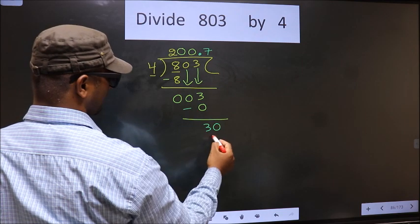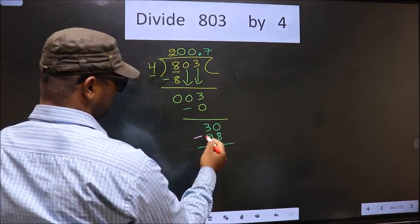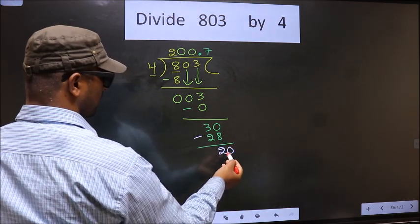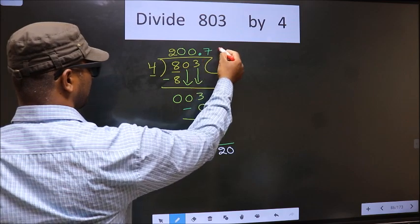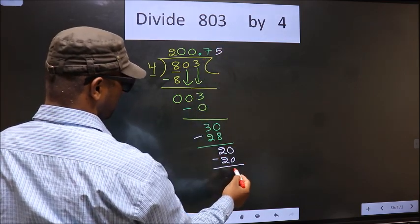Decimal is already there, so you take 0. When do we get 20 in the 4 table? 4 times 5 is 20. Now you subtract, you get 0.